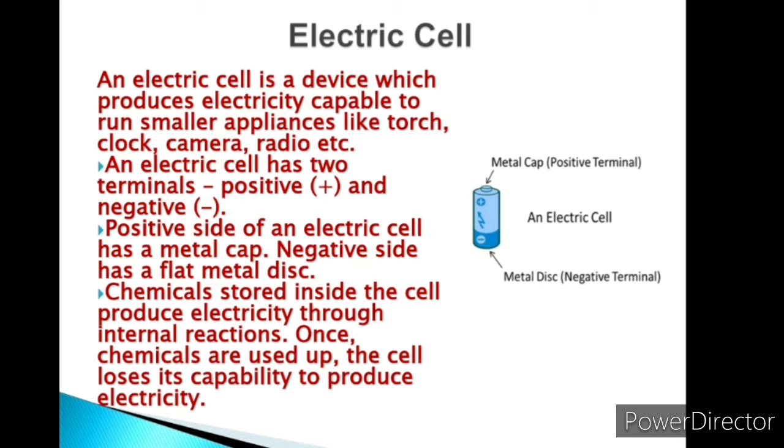This is the diagram. In this diagram, you can see the metal cap which is the positive terminal and this is the metal disc which is the negative terminal of the electric cell.